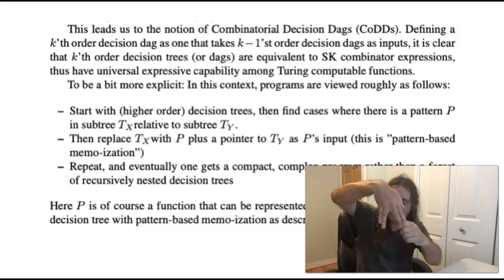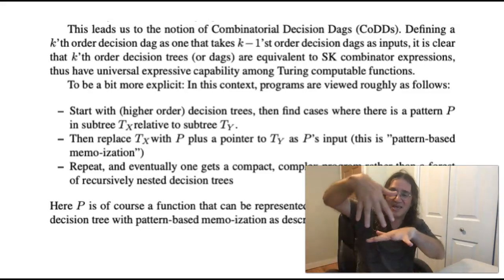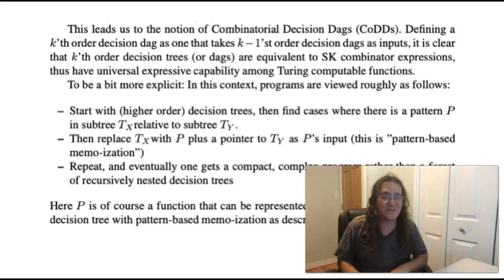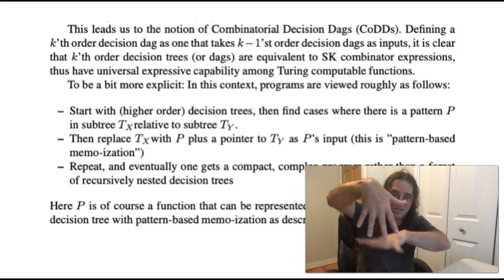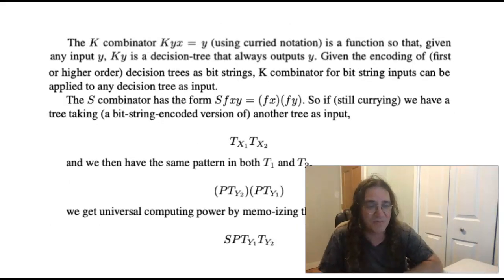If you have two decision trees that are not copies of each other but decision tree x could be produced from decision tree y by some other program that's smaller than decision tree x, then in that case you could get rid of decision tree x and replace it with the program for computing it from y and a pointer to y. So this is you can think of as pattern-based memoization inside a decision tree. If you do that and if you allow decision trees to take encoded versions of other decision trees as inputs, so let a decision tree act on the whole structure of a decision tree, then by putting recursive application of decision trees to decision trees together with pattern-based memoization then you get something quite general. I show in the paper that this is basically just a different way of looking at SK combinatory logic which has universal computation power.